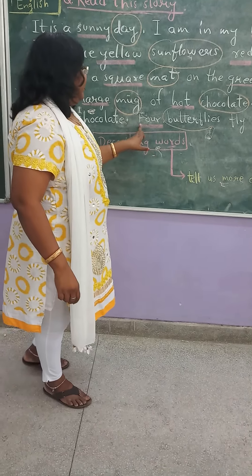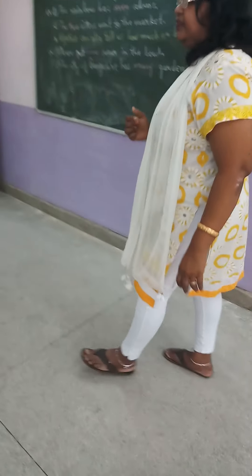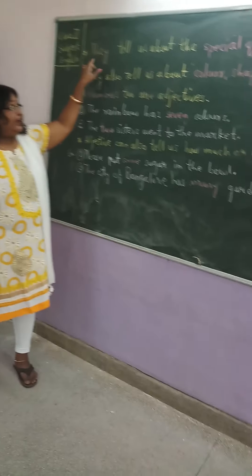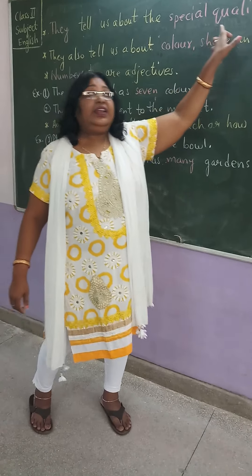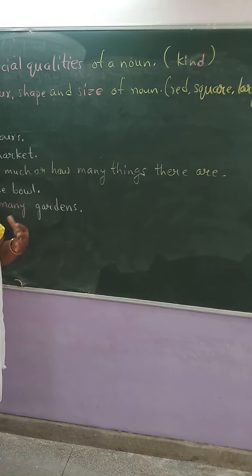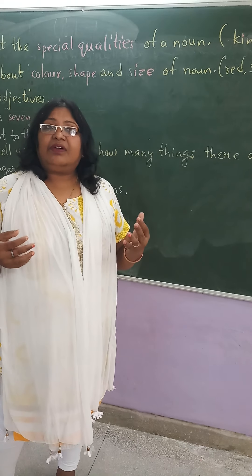You will find that these describing words describe the naming words. Naming words are names of persons, places, animals, and things. Describing words tell us many more things — they tell us about the special quality of a noun, like kind, good, bad, beautiful, ugly. These are the qualities.